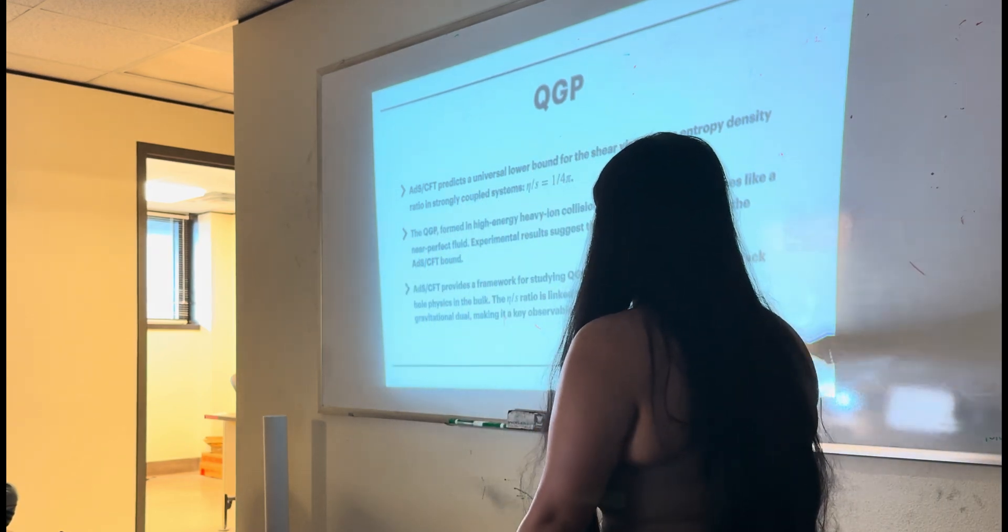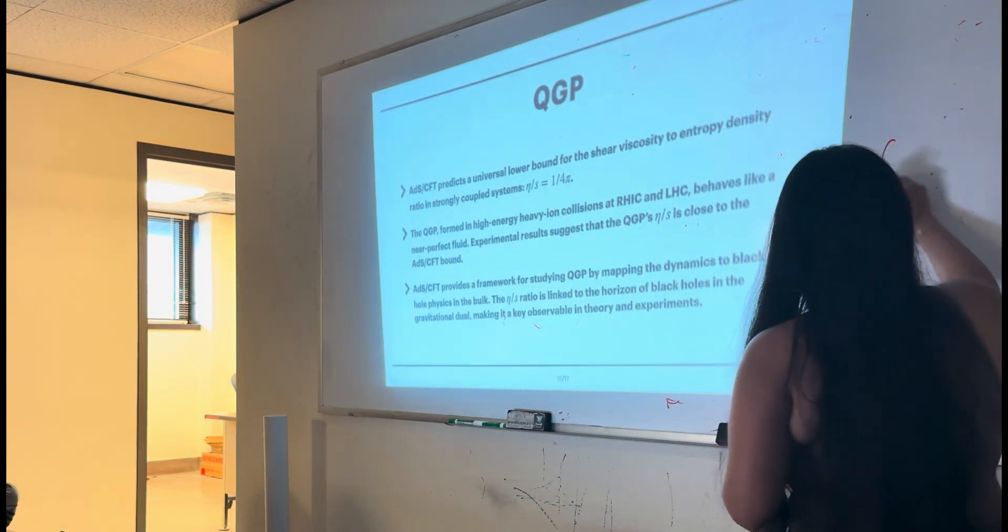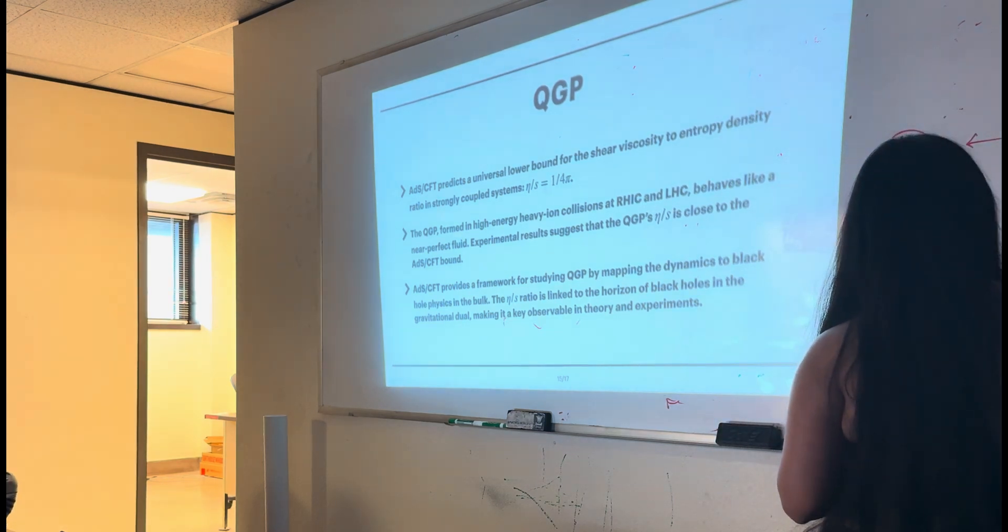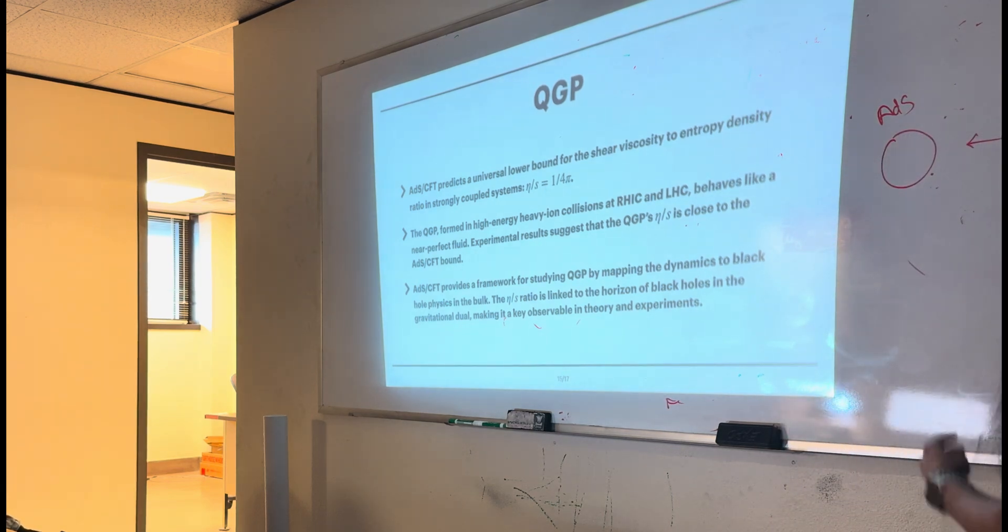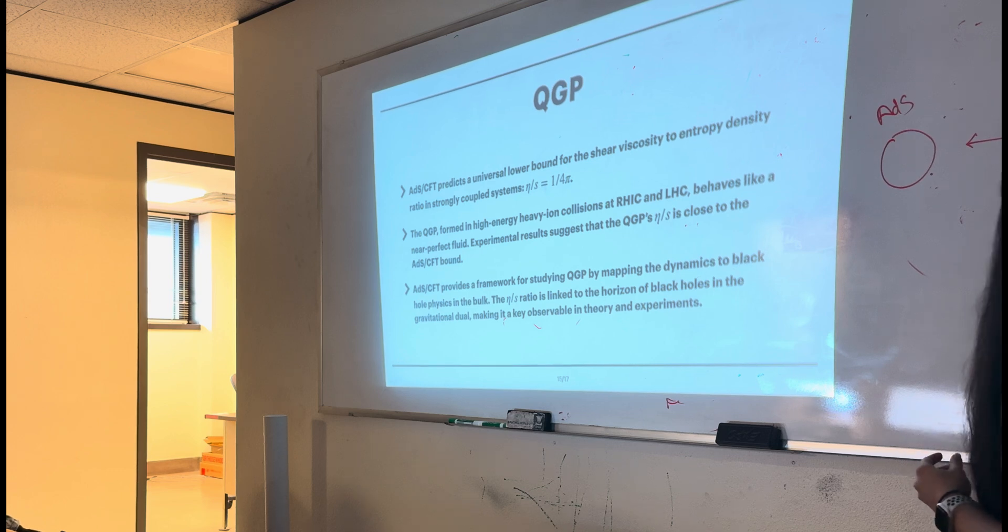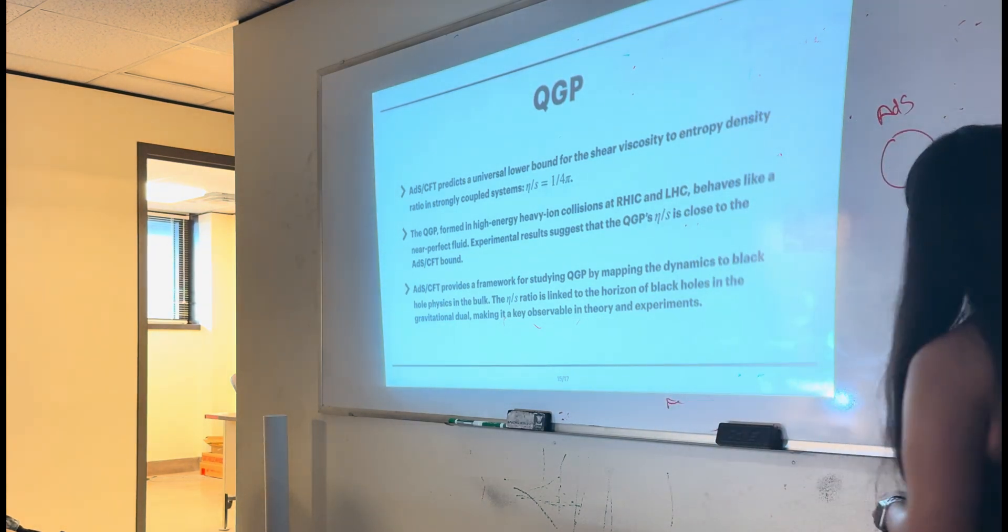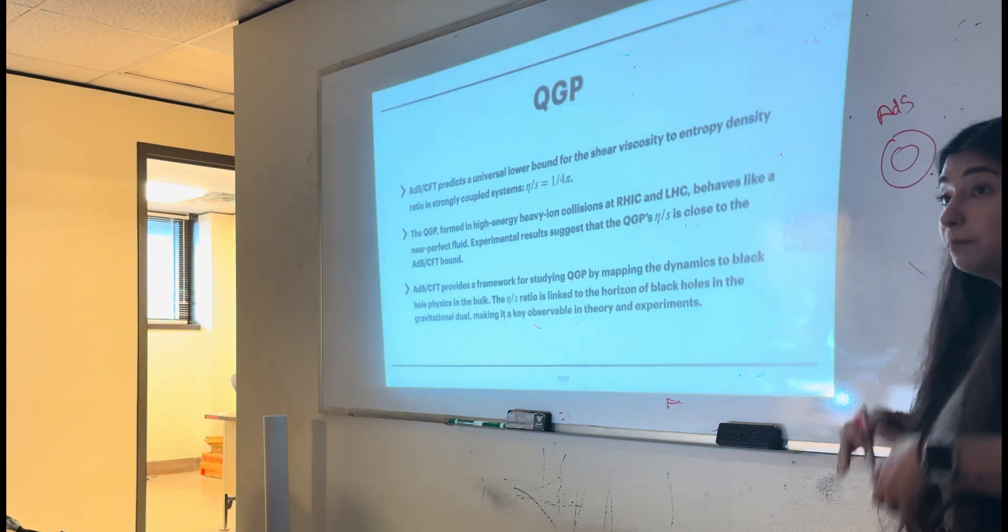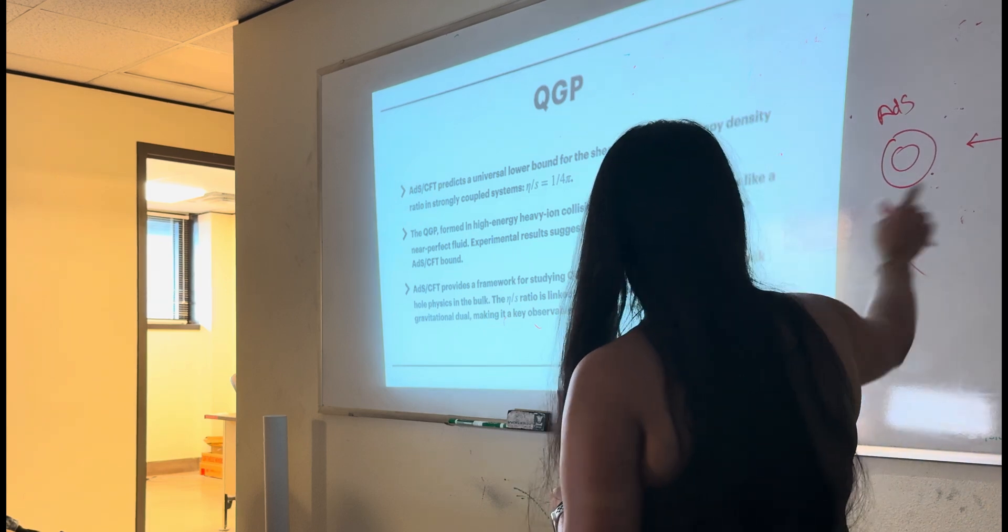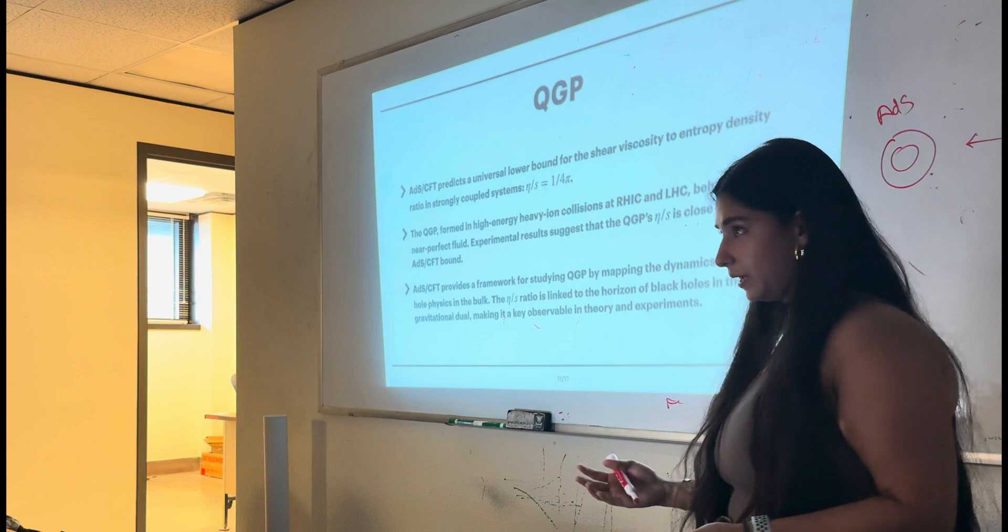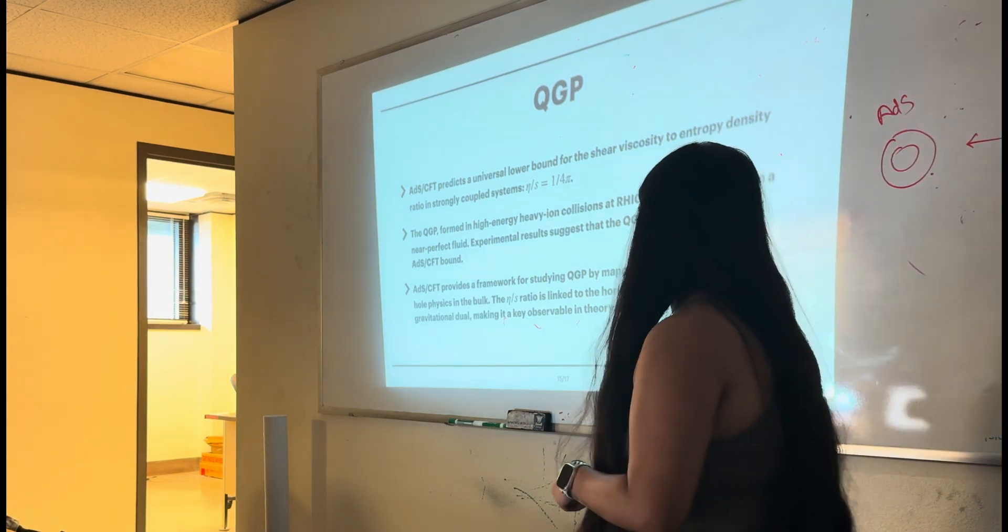So now, what is it doing for us? If you all remember, in my last presentation, I talked about how the duality works if on one side, we have a conformal theory or a quantum theory, and on the other side, we have AdS5. And if we want to see how we map QGP to AdS5, we have QGP at a certain temperature, at high energy and high temperature. And when we map it to the AdS using this correspondence, we see that we have a black hole in our AdS5. And we have many different kinds of black holes depending on the temperature that we have our QGP act. Thus, AdS5 provides a framework for studying QGP by mapping those dynamics to black hole physics in the bulk. This ratio is linked to the horizon of the black hole in the gravitational dual, making it a key observable in theory and experiments.